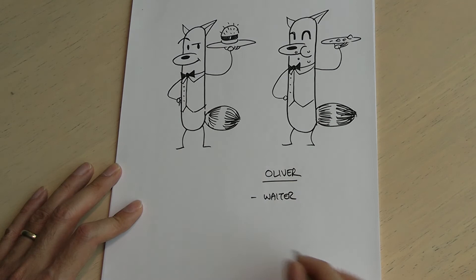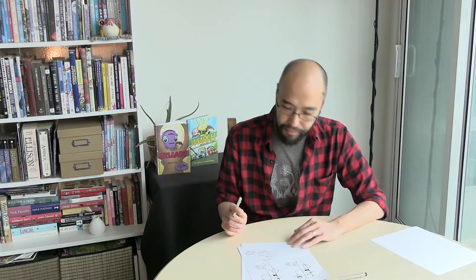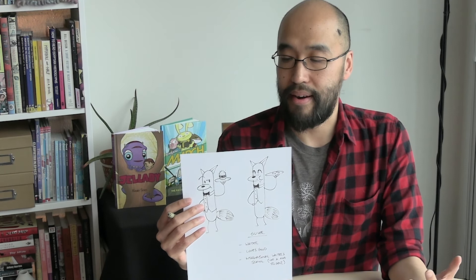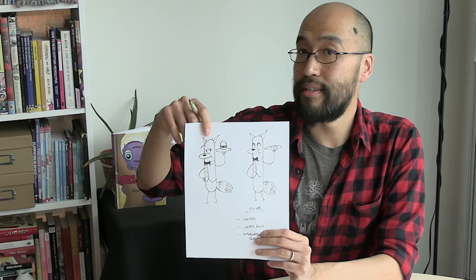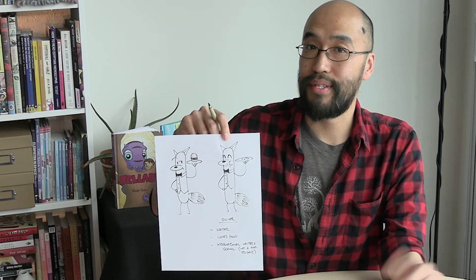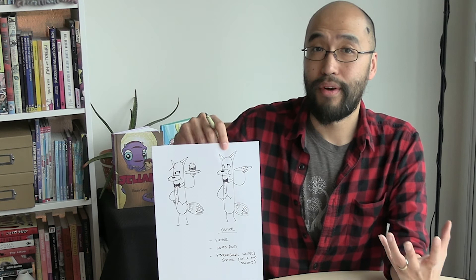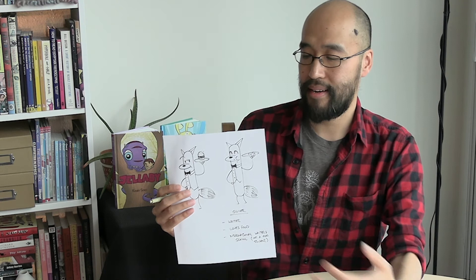He probably wouldn't get very far if there was a hamburger he was carrying out to a table. Maybe he would actually eat the hamburger. So a second drawing might show him serving a plate of crumbs — he's actually eaten the hamburger before it got to the table. Here we've got the dog who's the waiter, but he's secretly eaten the food before he's able to deliver it, and that's where stories come out of the characters themselves.